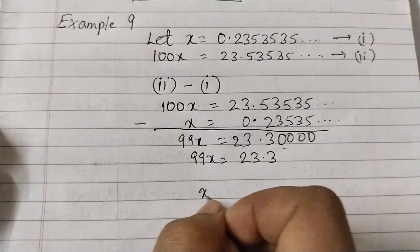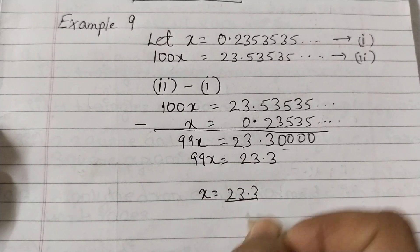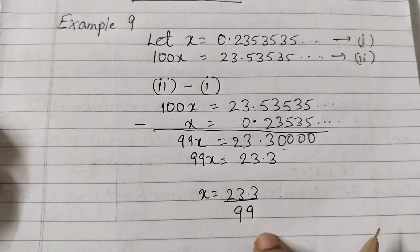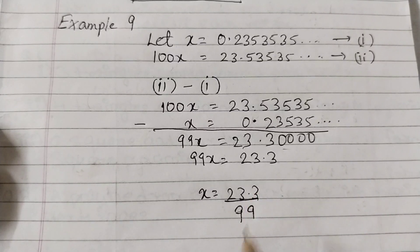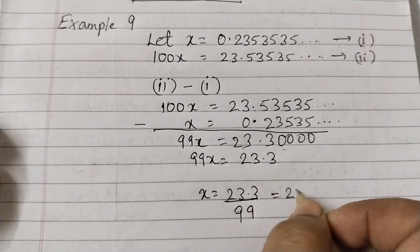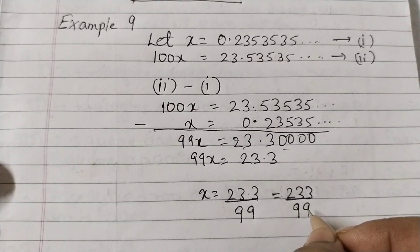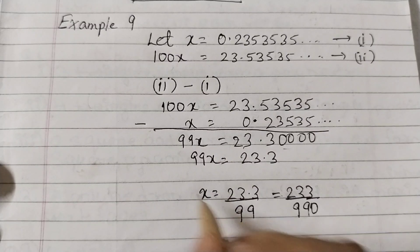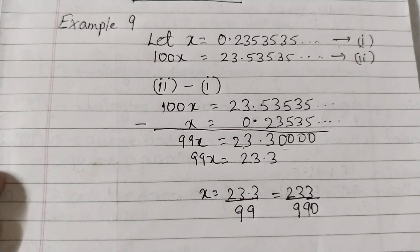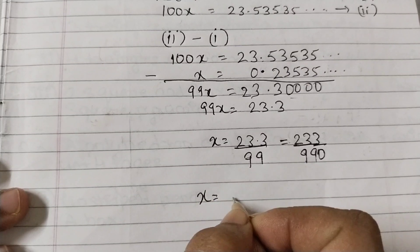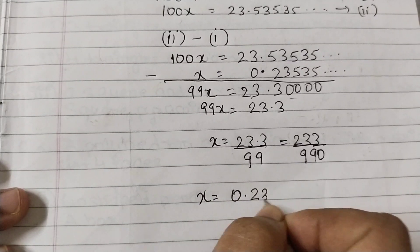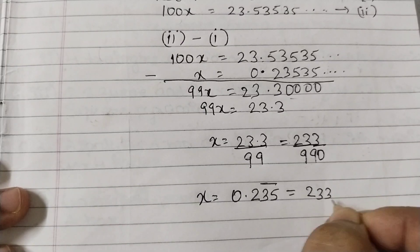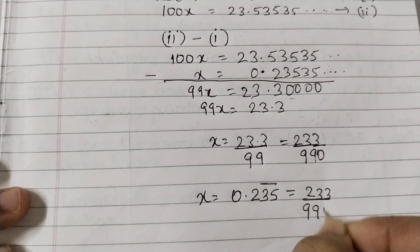So x = 23.3 divided by 99. Multiply both numerator and denominator by 10 to remove the decimal point, giving 233 over 990. There are no common factors, so this is the final answer: x = 0.235 bar = 233/990.